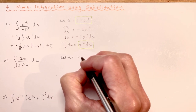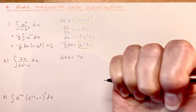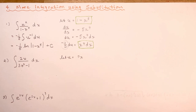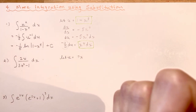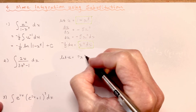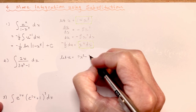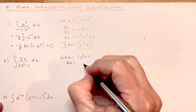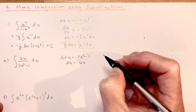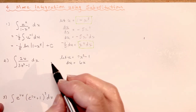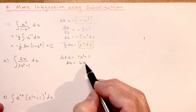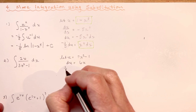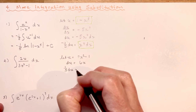Let u equal 3x squared minus 1. So that means du is going to be equal to 6x dx. But I need to adjust it because this is 2x — I want it to say 2x. So I'm going to divide by 3, giving me 1/3 du equal to 2x dx.